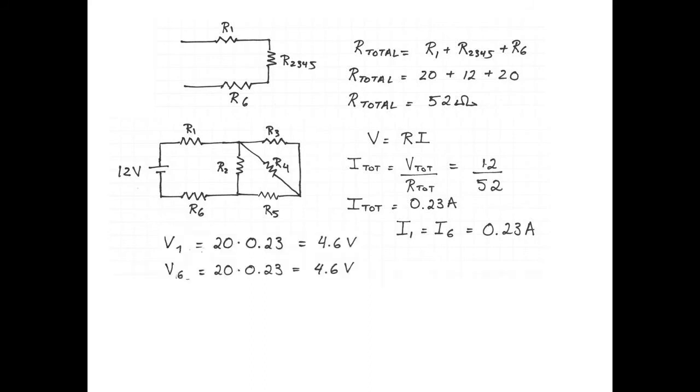And the voltage across resistor 1 is R1 multiplied by the current, 4.6 volts, and the voltage across resistor 6 is, once again, the resistance multiplied by the current, another 4.6 volts. Now, the fact that these two voltages are the same is just because they're equal resistances, and there's the same current through them.